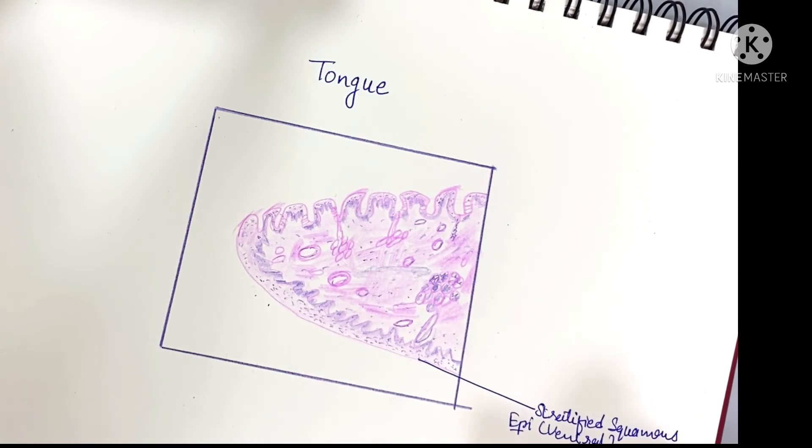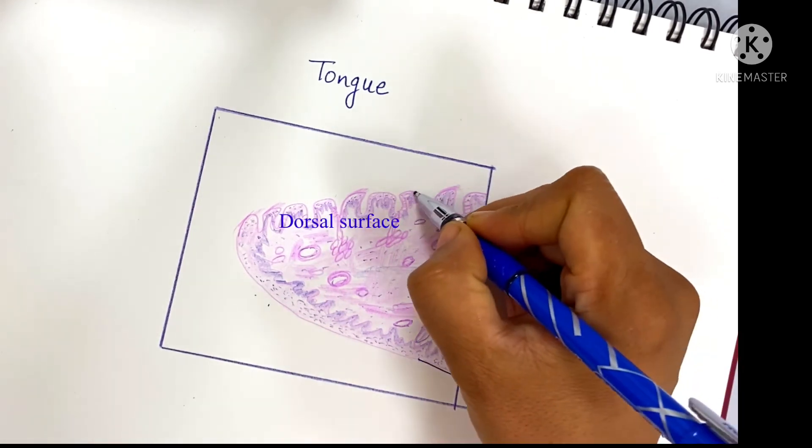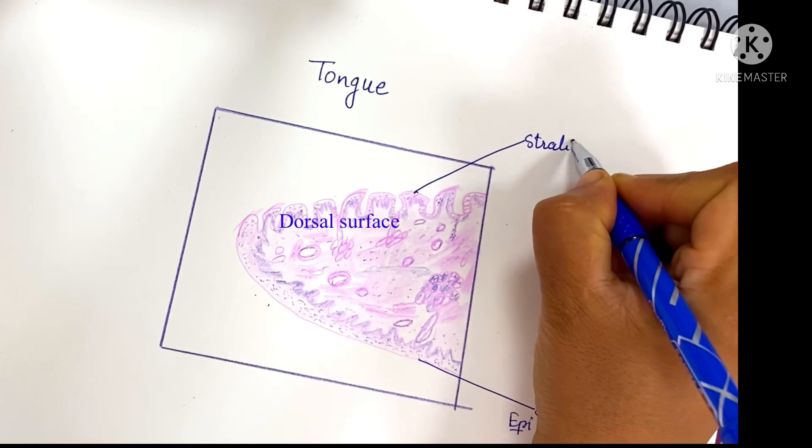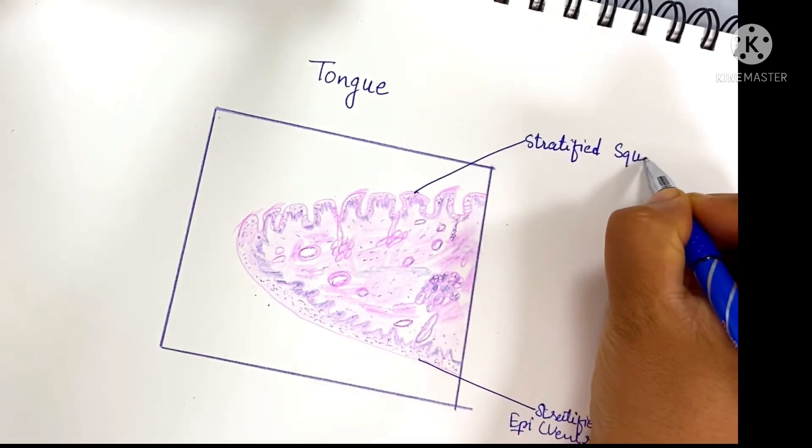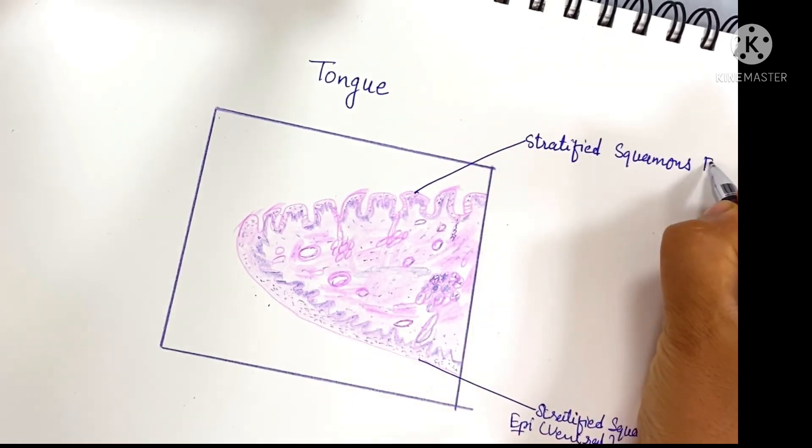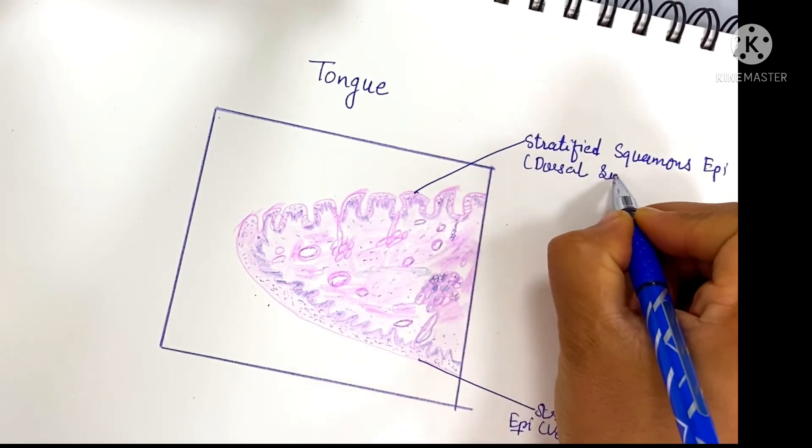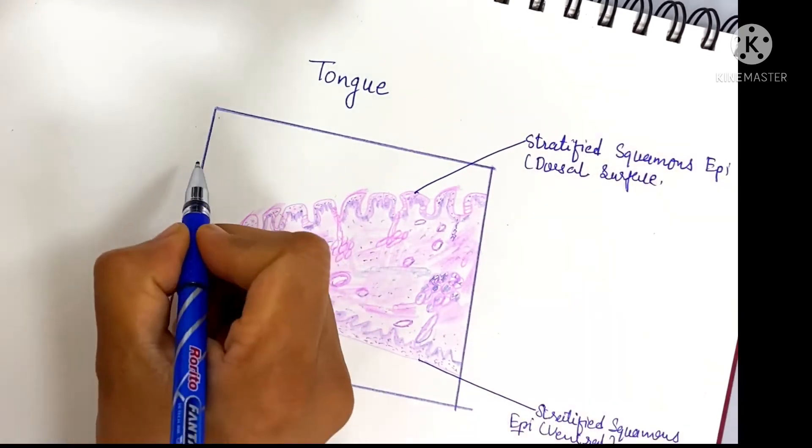On the dorsal surface, the irregular projections form papillae.